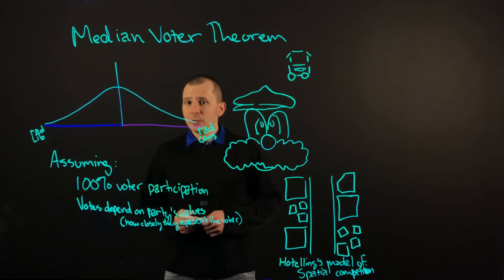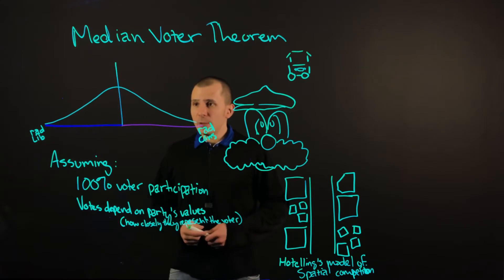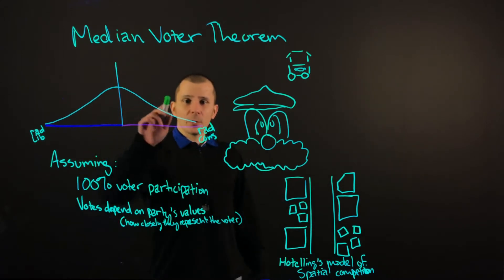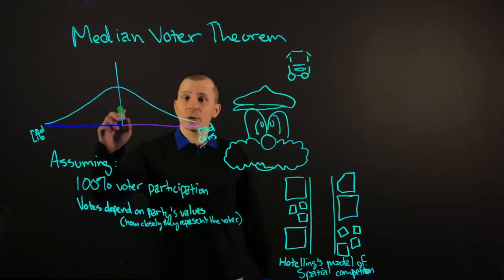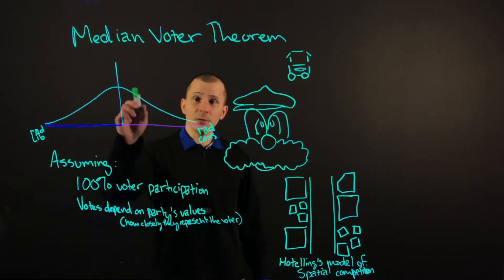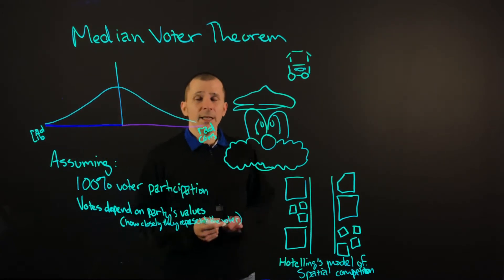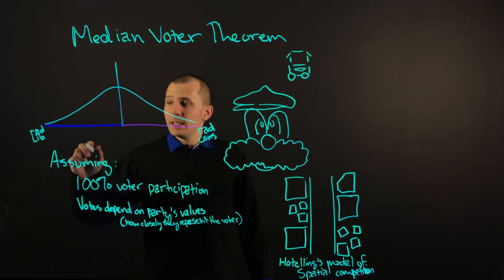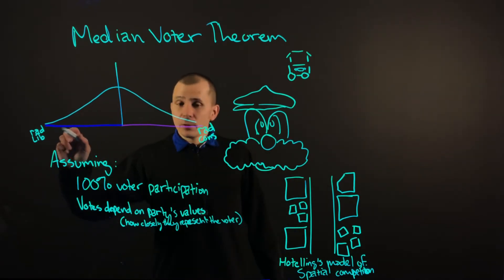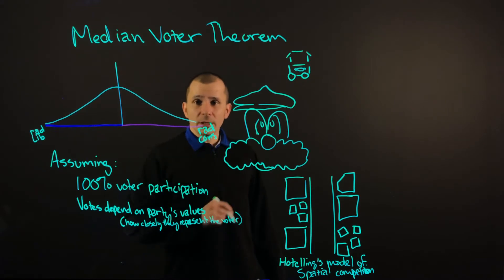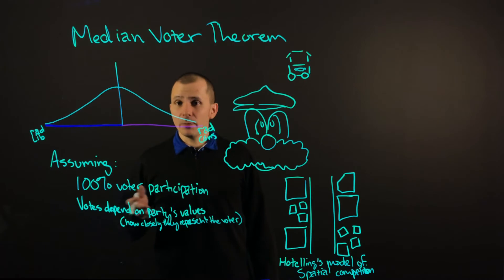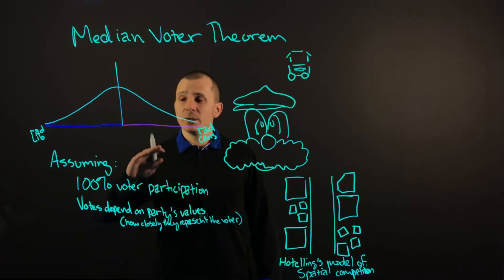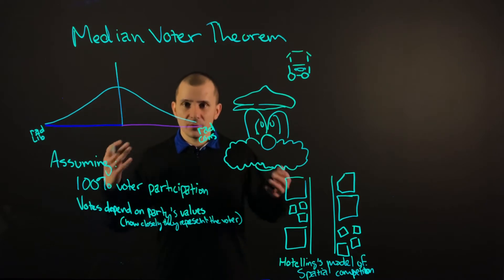Median Voter Theorem generally is an idea which assumes a bell curve or an even distribution of voters across the voting or political ideological spectrum. Essentially what it comes down to is that there are going to be fewer radical liberals and fewer radical conservatives than all the other voters. So essentially both parties, Republican and Democrat, want to meet in the middle to have the most of both worlds and try to get the most votes out of everybody.